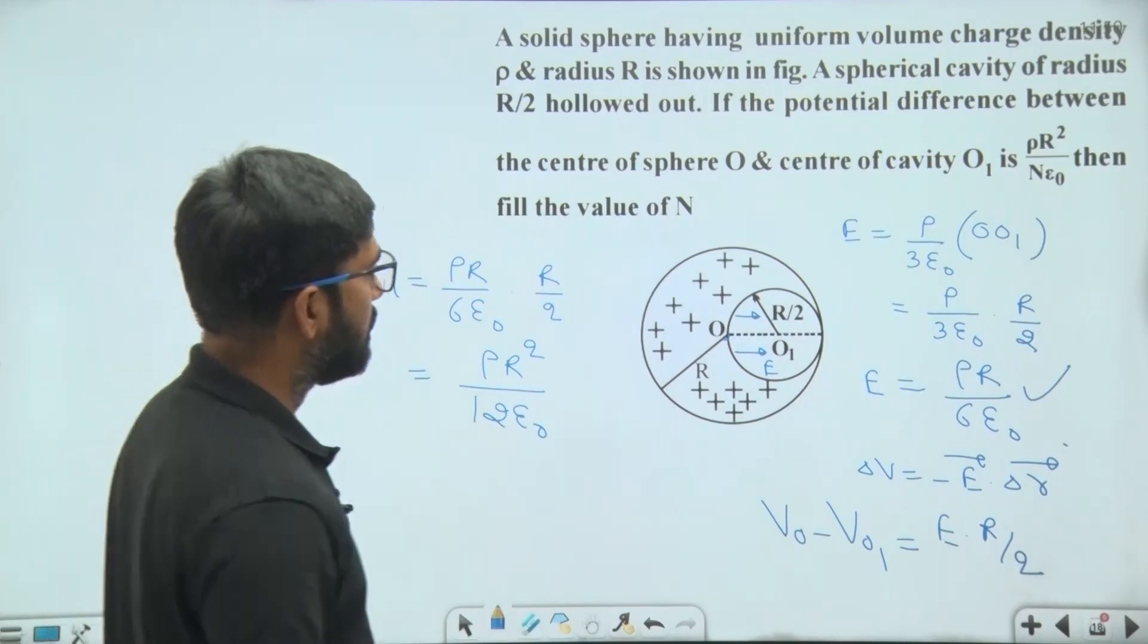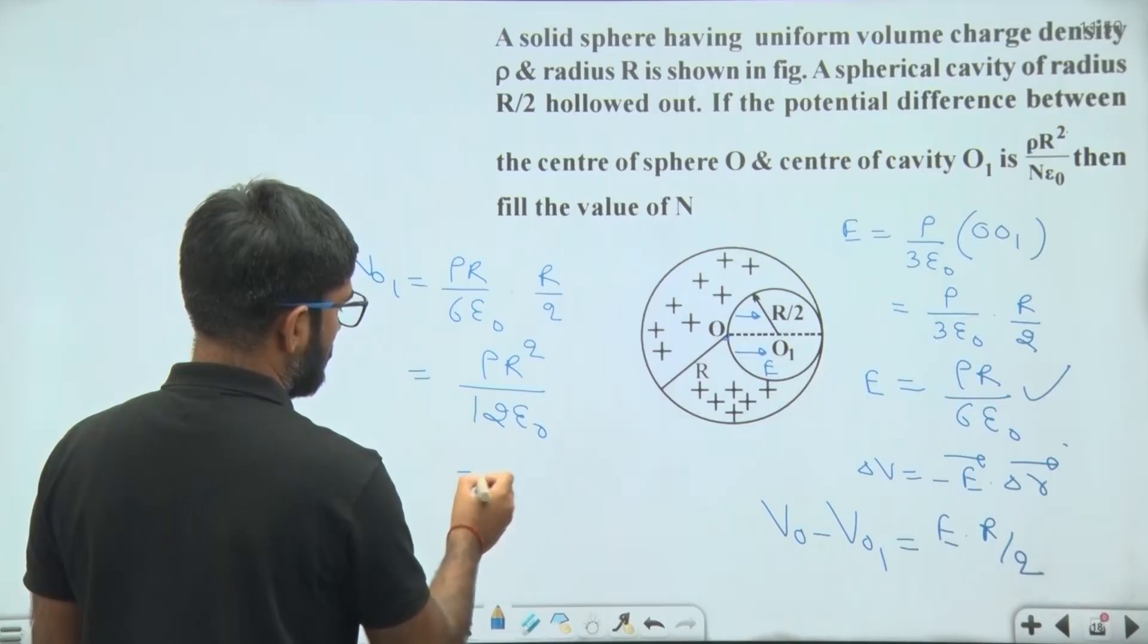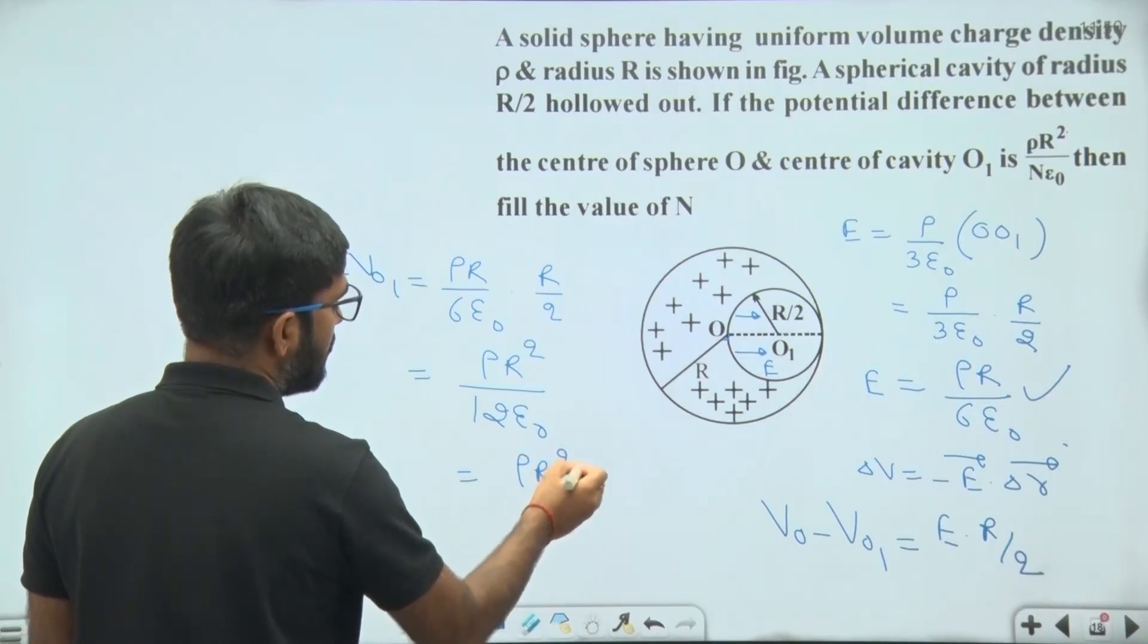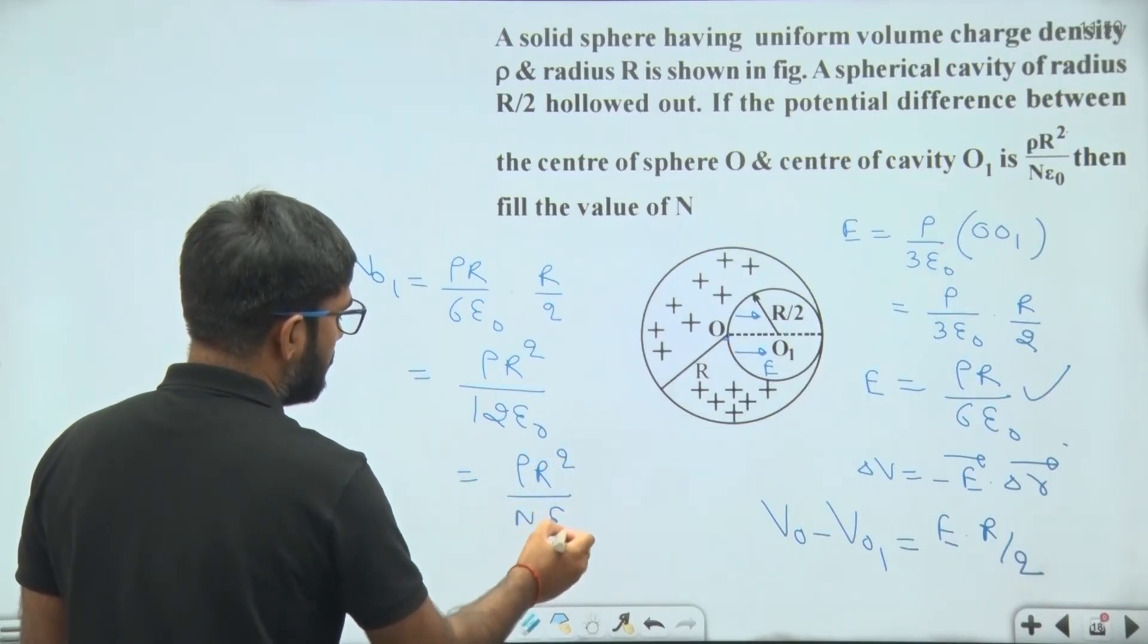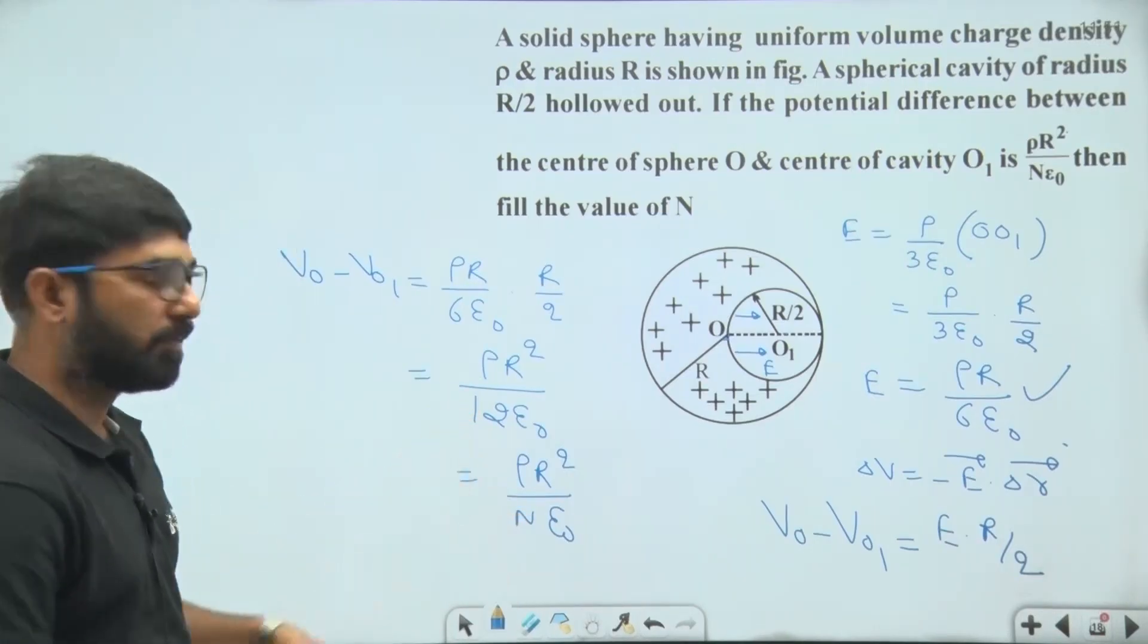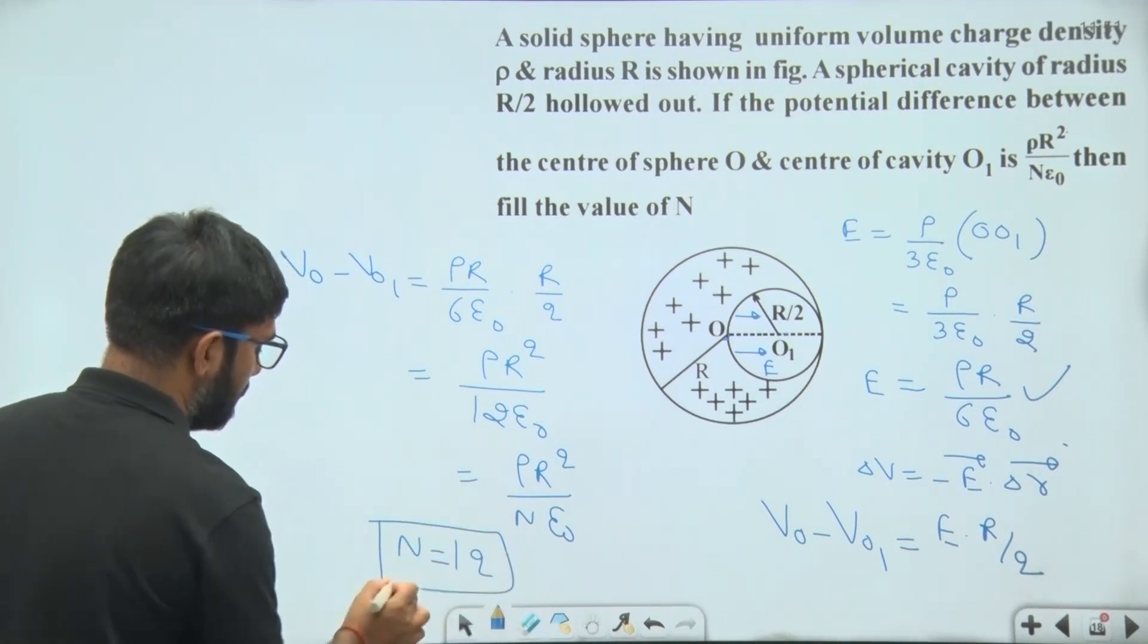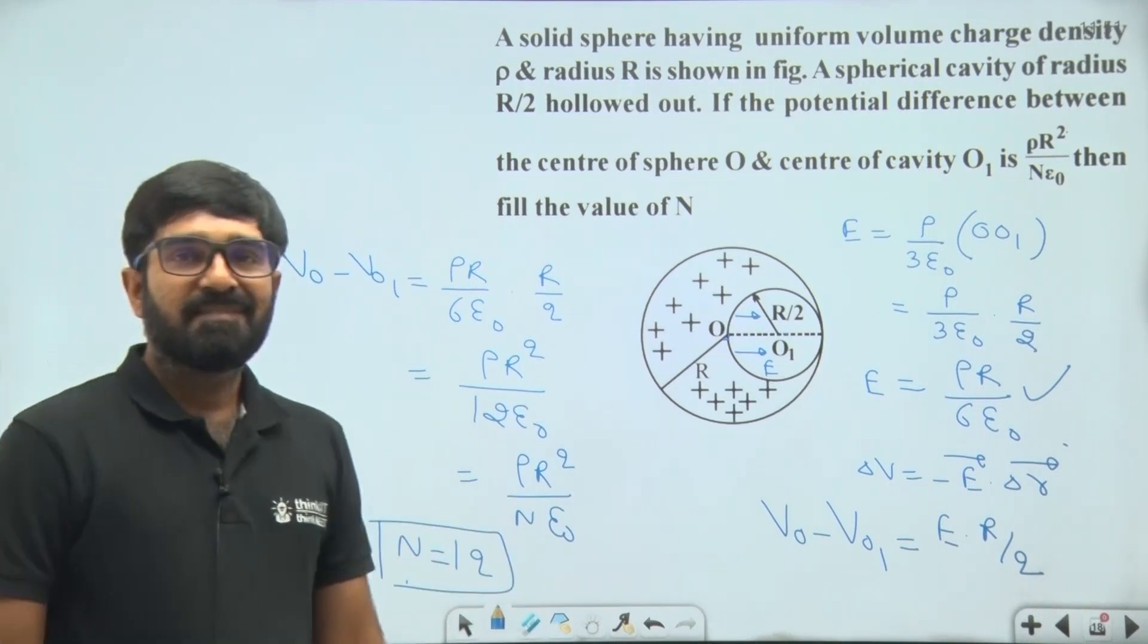According to question, this potential difference is given by rho into R square upon N epsilon 0. Comparing these two values we get N equal to 12. Then final answer will be 12. Thank you.